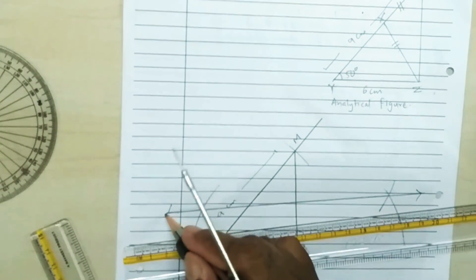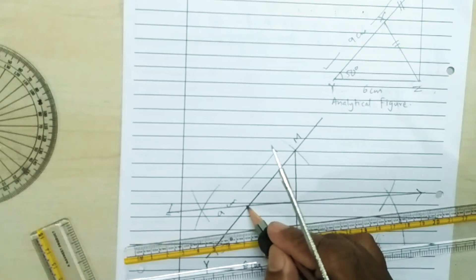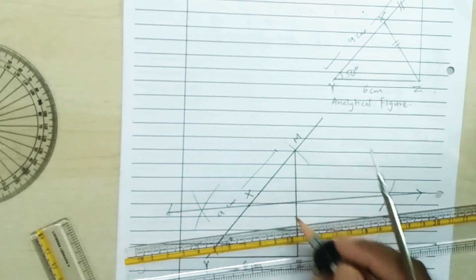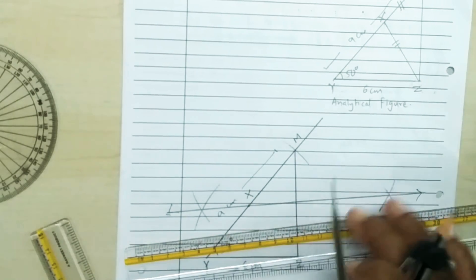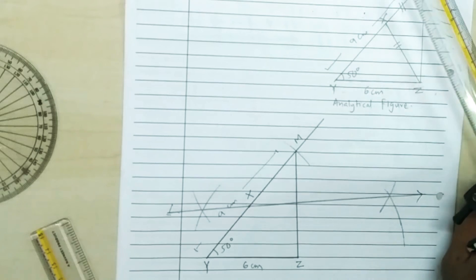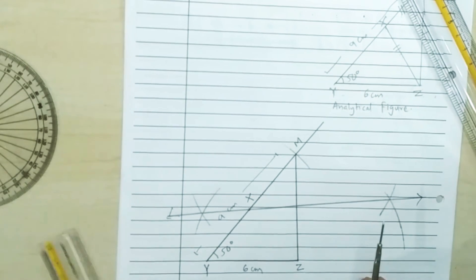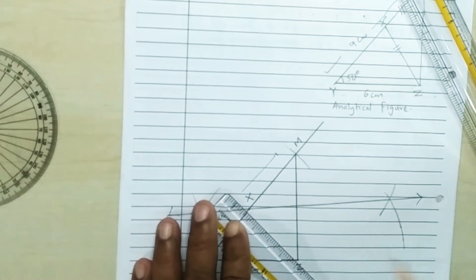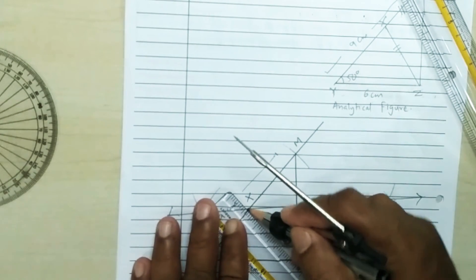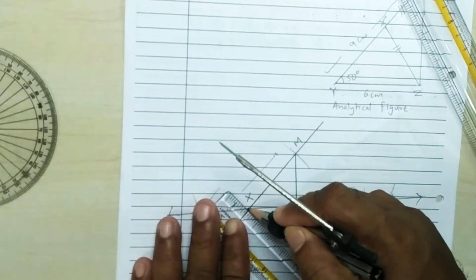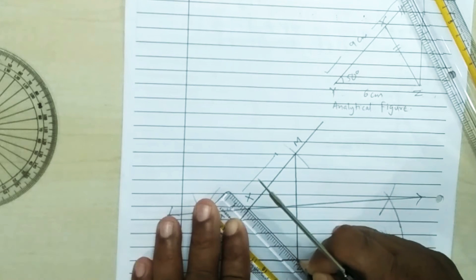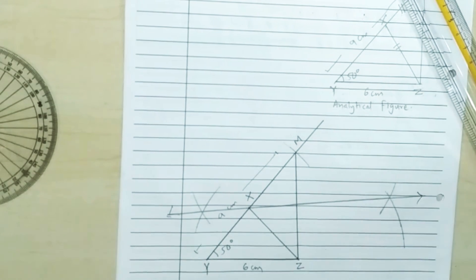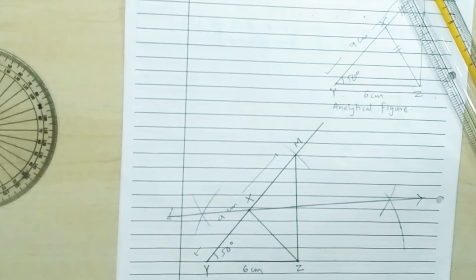Point X is here — wherever the perpendicular bisector intersects YM, join XZ. This is how we can construct triangle XYZ.